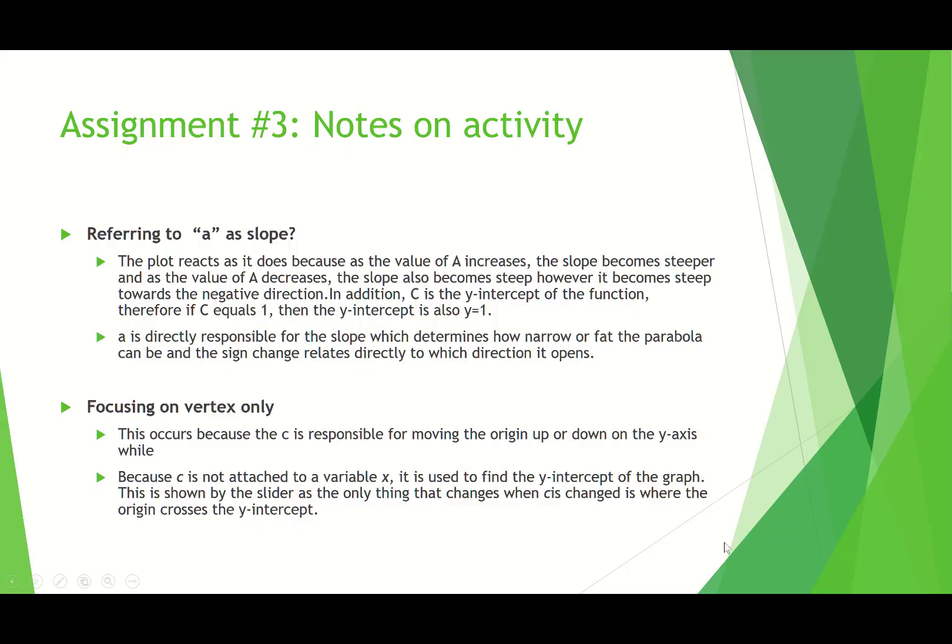There's a couple of other notes on the activity assignment. Several of you said a refers to the slope of the parabola. So for example, one person says the plot reacts as it does because the value of a increases, the slope becomes steeper. As the value of a decreases, the slope also becomes steep. However, it becomes steep towards the negative direction. Now I'm not sure what exactly you mean by that because a parabola doesn't really have a single slope. In addition, c is the y-intercept of the function, therefore if c equals one, the y-intercept is also equal to one. What I'm trying to get at is referring to a as a slope. If you have a parabola, then the slope would be different at each point x, right? That's the definition of the derivative is the slope at a given point x. It's the slope of the tangent line at that point x. So I'm not sure what you mean by a being the slope of the parabola.